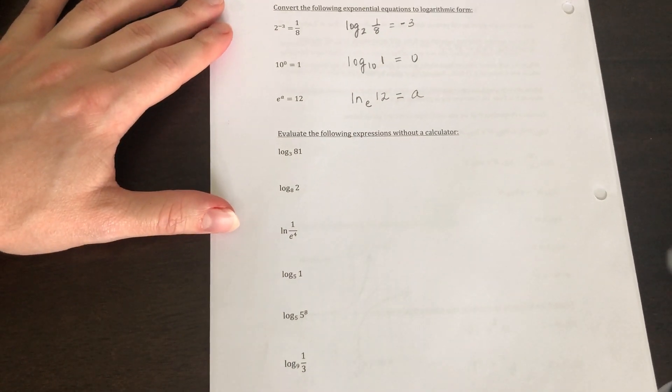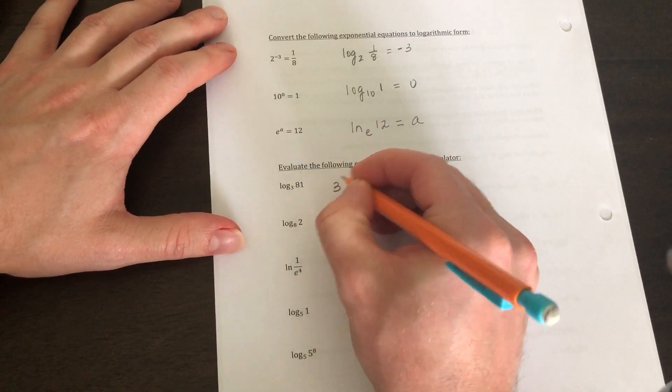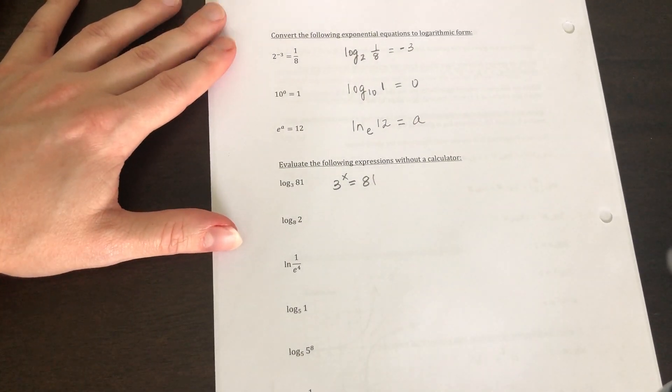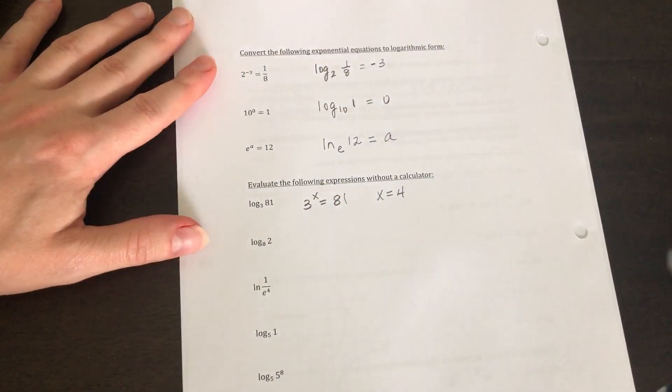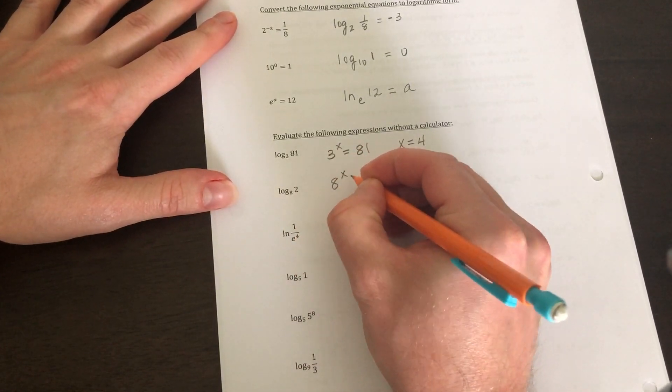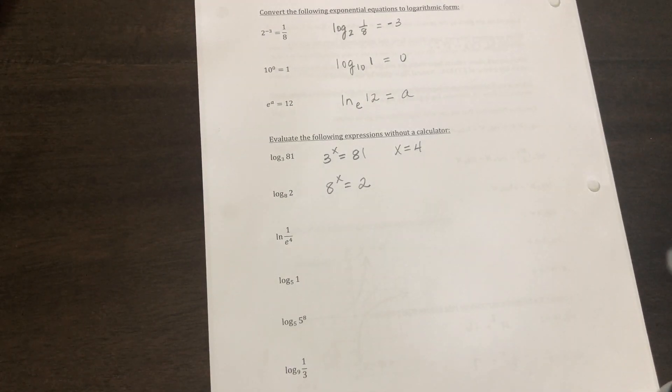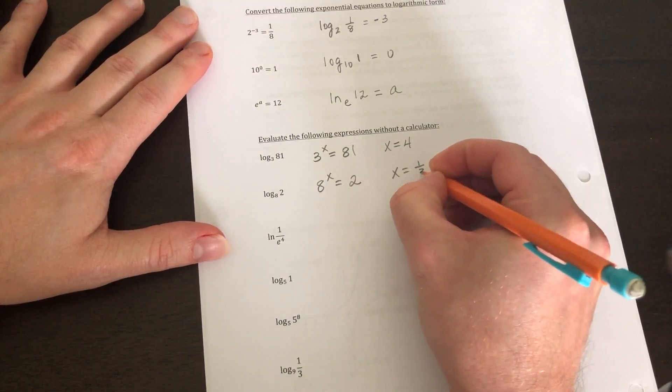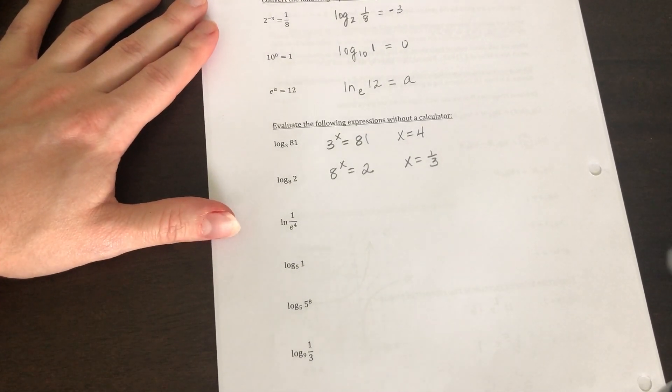Now it says evaluate the following expressions without a calculator. So we're going to say three to what power gives us 81? On this one, so we should know that three to the fourth power gives us 81. Eight to what power gives us two? Well, I know that if I take the cube root of eight, I get two. So the way we write cube root is to the one third power. We know that from our previous lessons.